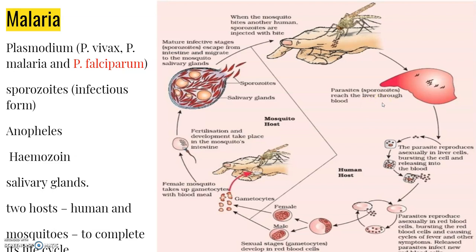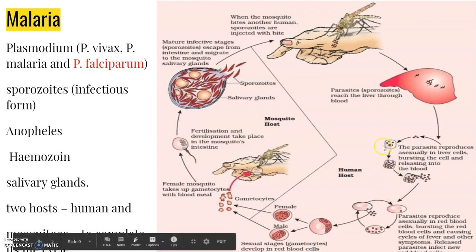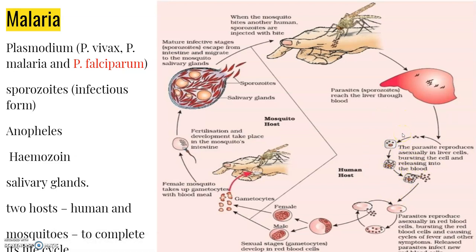After multiplying in the liver cells, the parasite attacks the red blood cells (RBCs), resulting in their rupture. You can see this in the life cycle diagram here. The rupture of the RBCs is associated with the release of a toxic substance called hemozoin, which is responsible for the recurring chills and high fever every three to four hours.